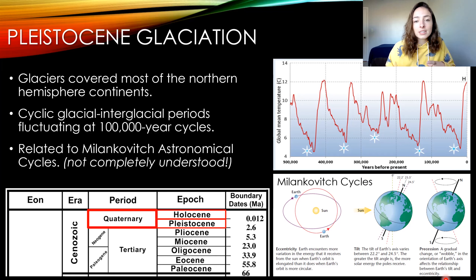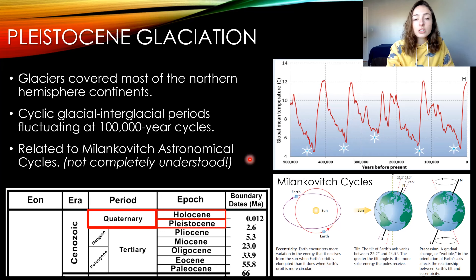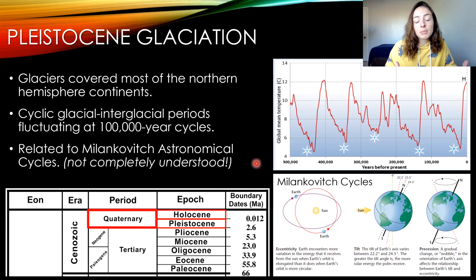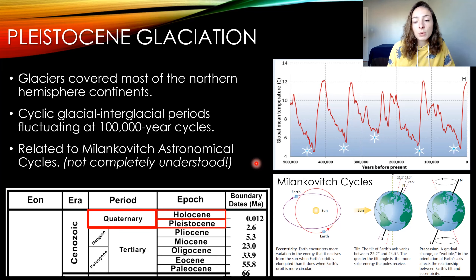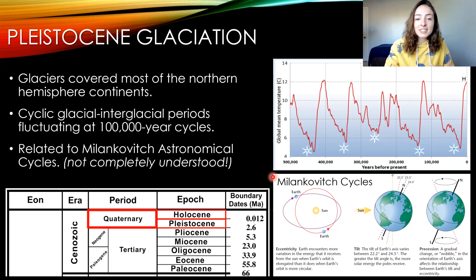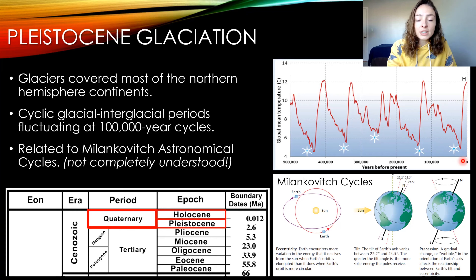We think these glacial cycles were related to the Milankovitch cycles — Earth's eccentricity, tilt, and wobble — all of these astronomical factors coming into play, probably due to the distance Earth was from the sun at certain periods in its orbit. I want to note that this matching of Milankovitch cycles with glacial cycles is not fully understood, so if it's something you want to look into, it is really interesting research.